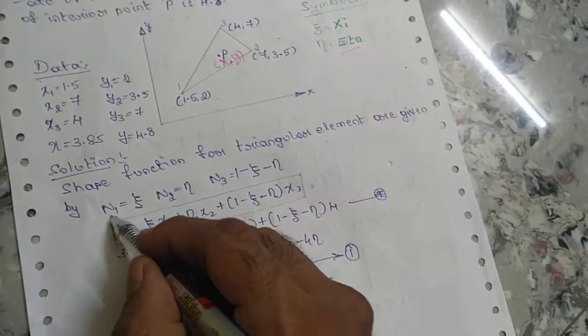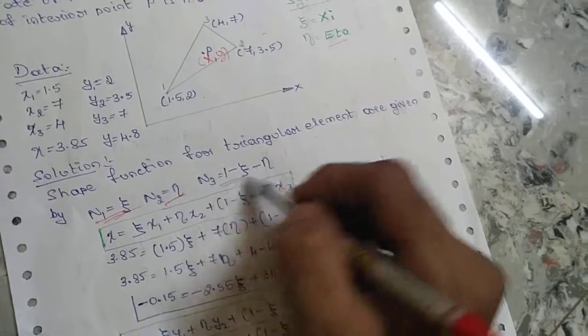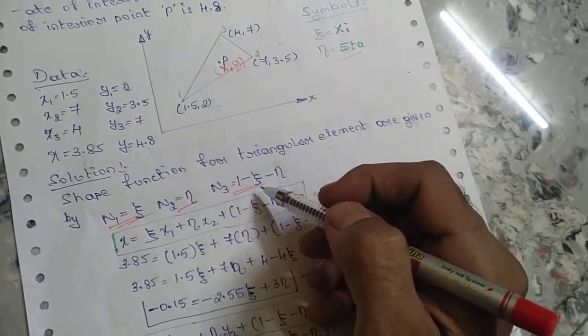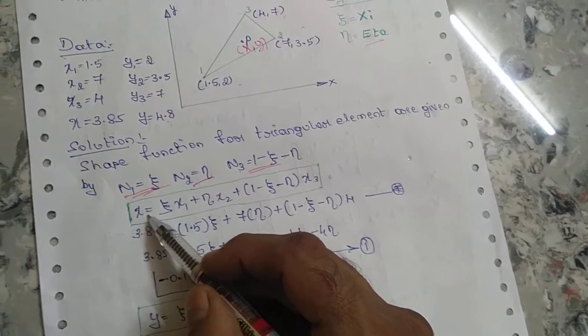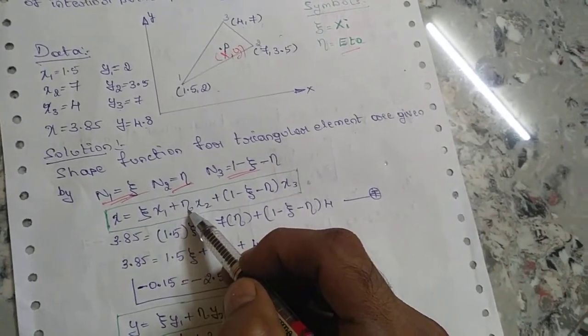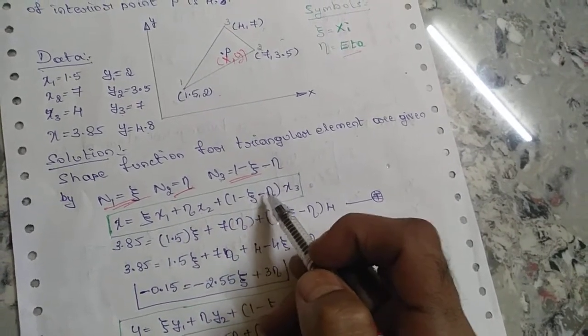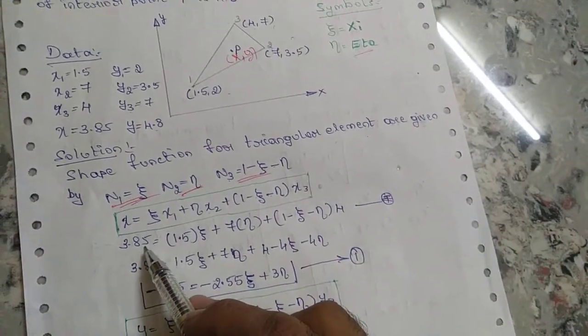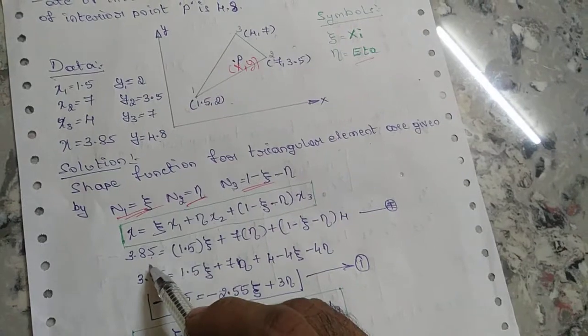You will get all these points in your derivations. I'll be uploading the derivation in my next video. X = ξ·x1 + η·x2 + (1 - ξ - η)·x3. I have substituted the value 3.85 here.